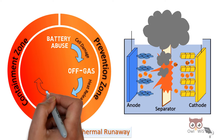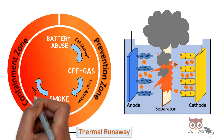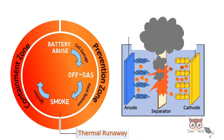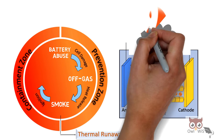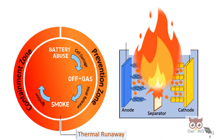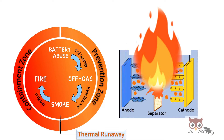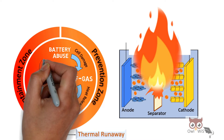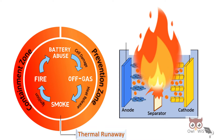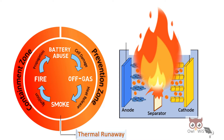After that, there is ignition which occurs, resulting in fire of the battery. This is the last stage. After that, if the abuse conditions still continue, then there will be propagation to the remaining cells of the battery.